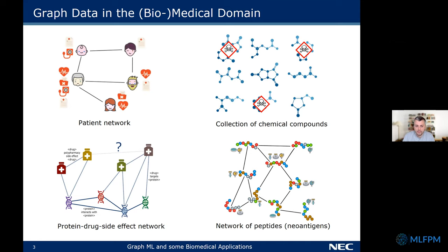The first question I want to answer is: why does an IT company like NEC care about graph data and specifically the biomedical domain? Here you can see four different types of graphs we've worked on in the past two to three years. We work with patient data — NEC is a big software vendor for medical records in Japan. Chemical compounds can be represented as a graph. We've worked with biomedical knowledge graphs where nodes are drugs, proteins, and diseases. And also a network of peptides — neoantigens — where we want to learn how likely they are to elicit an immune response in cancer patients.